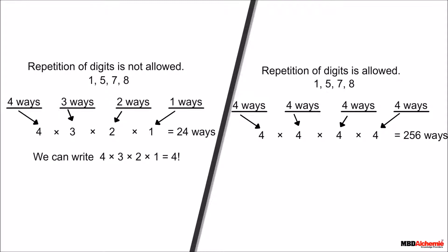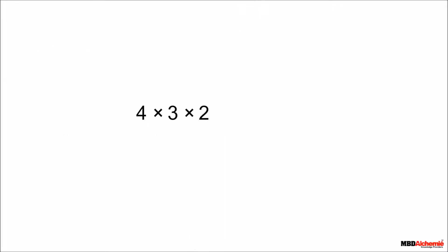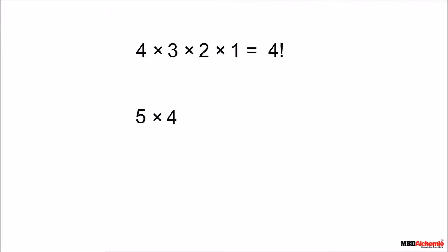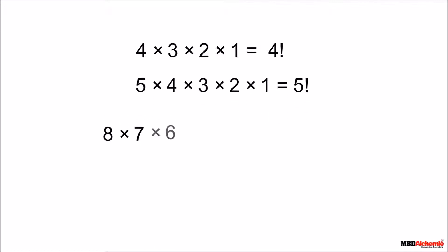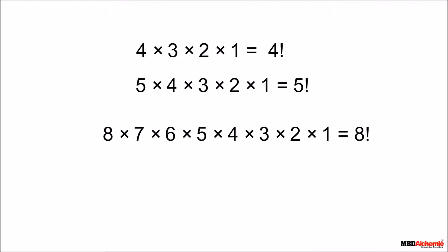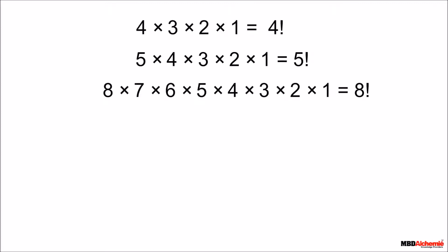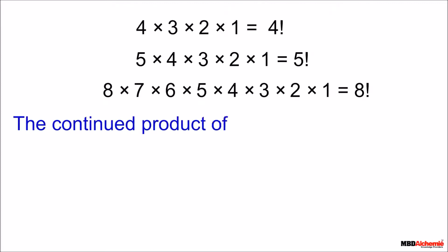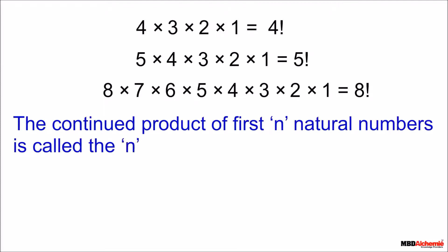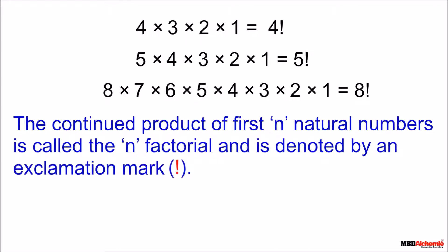In order to make our work more compact, we bring in a certain notation which is called factorial. As we see, 4 into 3 into 2 into 1 is called 4 factorial. In the same way, 5 into 4 into 3 into 2 into 1 is 5 factorial. We can also write 8 into 7 into 6 into 5 into 4 into 3 into 2 into 1, that is 8 factorial. In general, the continued product of the first n natural numbers is called n factorial and is denoted by an exclamation mark. n factorial equals 1 into 2 into 3 and so on, up to n minus 1 into n.